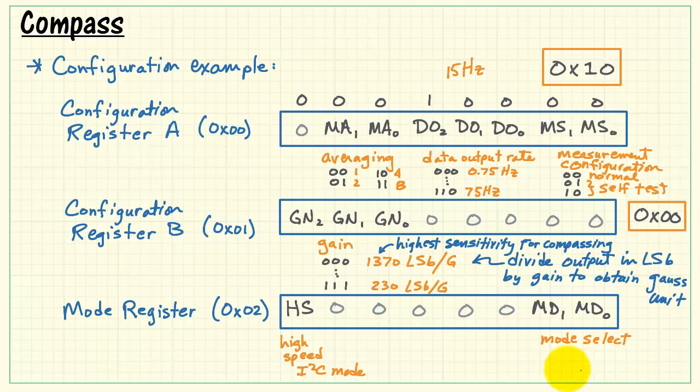The mode register, the last two bits here, are called the mode select. You have either continuous measurement mode, single measurement, or idle.